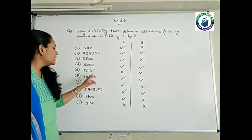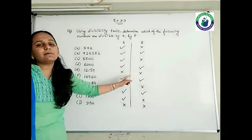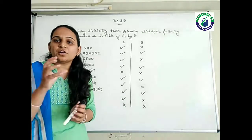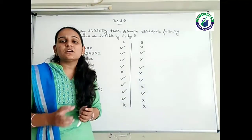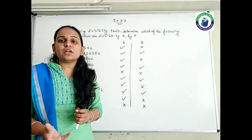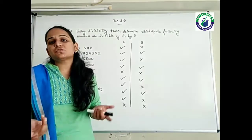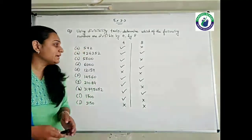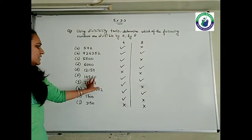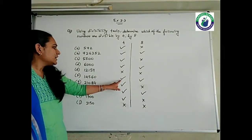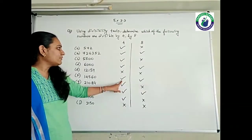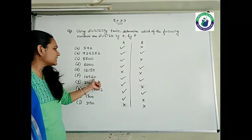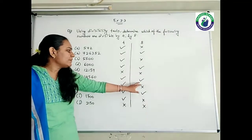59 — it is not divisible by 4 because 59 is an odd representative. So 4 and 8, both are even numbers, it is not going to get divided by these numbers. 16 — yes, it is divisible by 4. And 16, that is also divisible by 8.